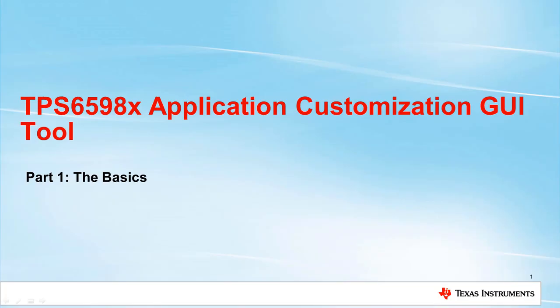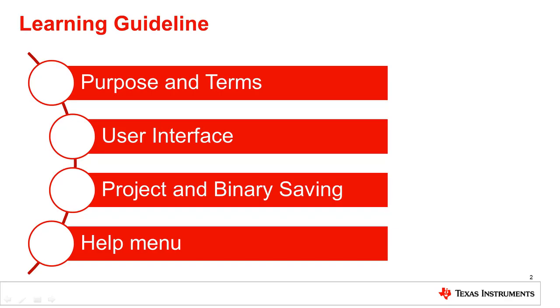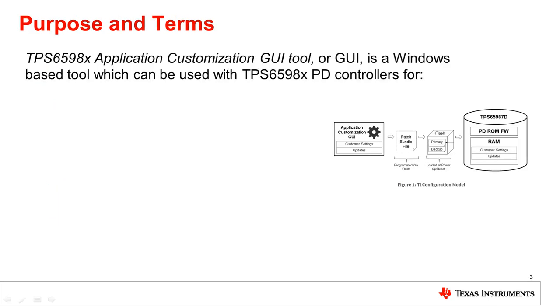Thank you for accessing Part 1 of the TPS6598X Application Customization GUI Tool video series. You can download the GUI software at the link shown below. This video will walk you through the GUI's purpose and terms, the user interface, project and binary savings, and the help menu. For the rest of the video series, we will refer to the Application Customization GUI Tool as the GUI.